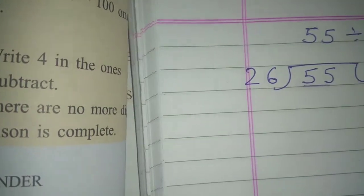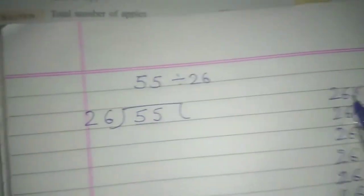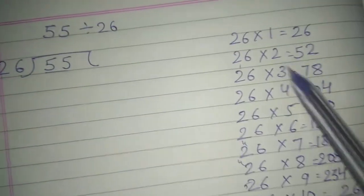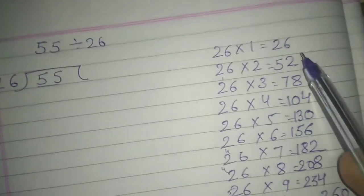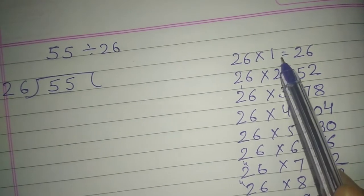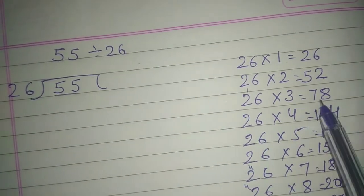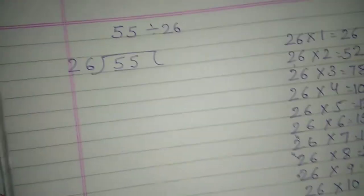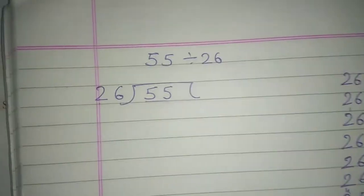So first of all you make a table of 26. 26 multiplied by 1, then 2, then 3, and overall up to 10 we multiply. You will make a table because you will have big digits like 35, 45, 93. So you need to make a multiplication table.